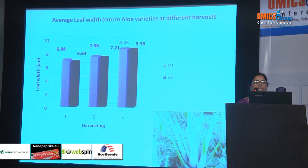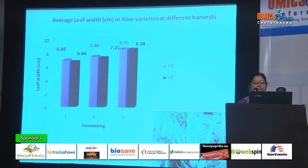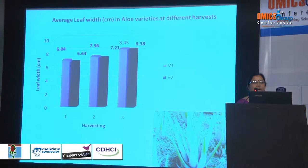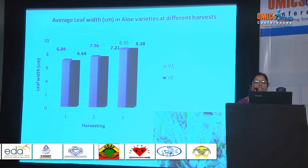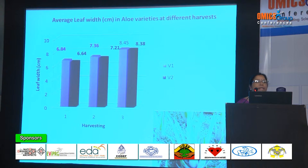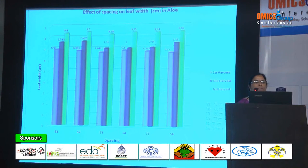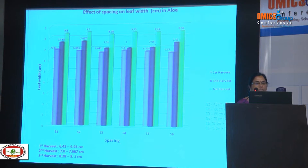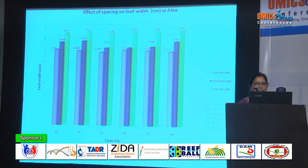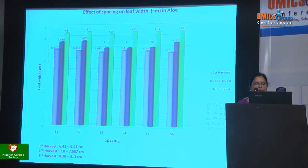This slide shows the average width of the aloe vera leaf at different harvests. There is no significant difference between the two varieties with reference to leaf width. The leaf width during the first harvest is around 6.4 to 6.8 cm, whereas in the third harvest, due to increased leaf size, it goes to 8.38 to 8.45 cm. Similarly, no significant difference was found between different spacings for leaf width. The range during first harvest is 6.43 to 6.53 cm, second harvest 7.0 to 7.67 cm, and third harvest 8.28 to 8.5 cm.